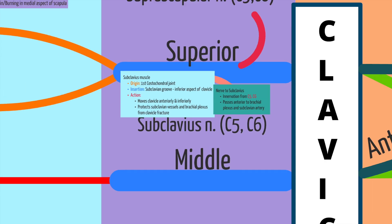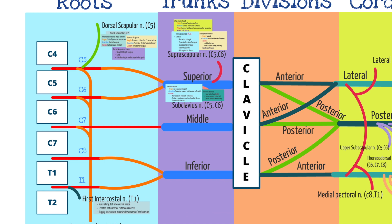In the section of trunks, the only two nerve branches are the suprascapular nerve and the nerve to the subclavius. Once the trunks pass through the posterior triangle and under the clavicle, they then transition to the divisions. There are three anterior divisions and three posterior divisions. There are no nerve branches that originate from the divisions. The importance of the divisions is that the nerve roots essentially mix together, which helps set up the development of the numerous nerve branches we will talk about in the next two videos.